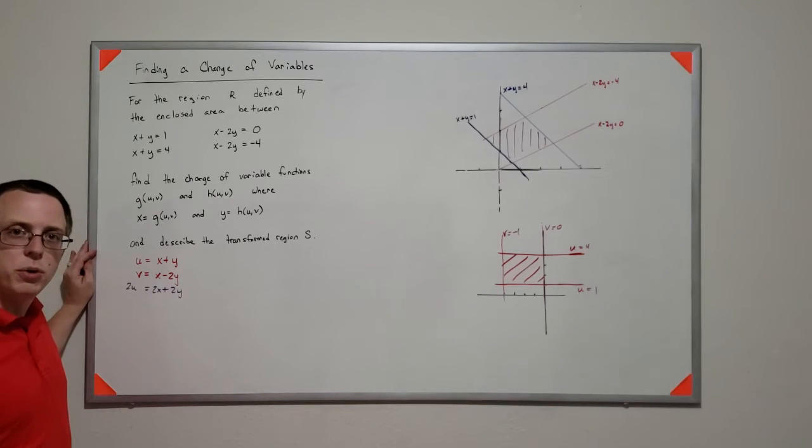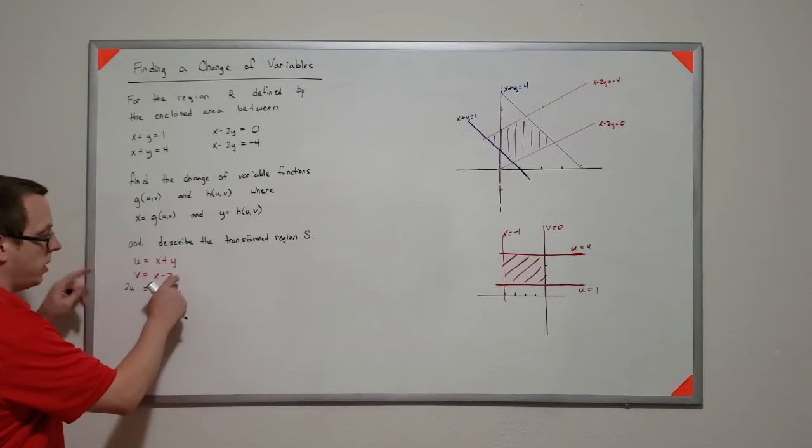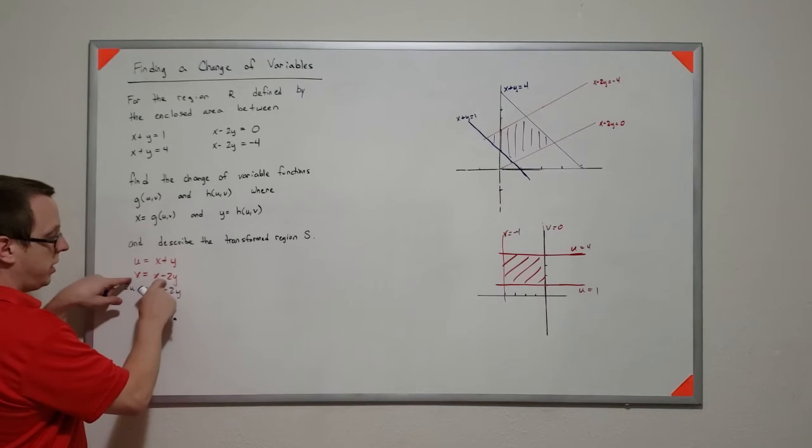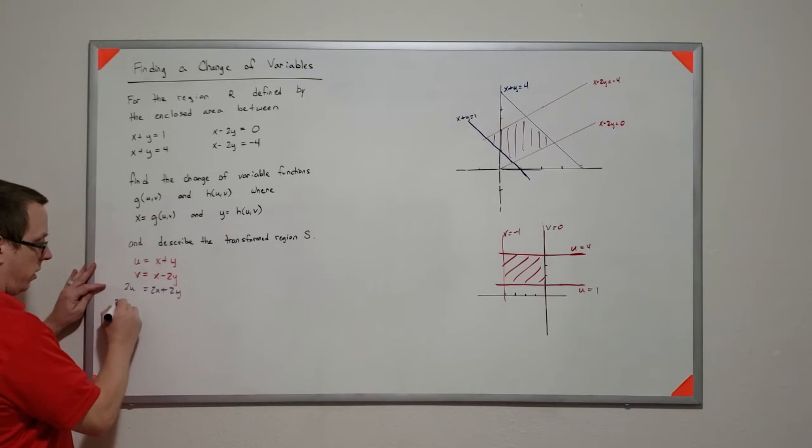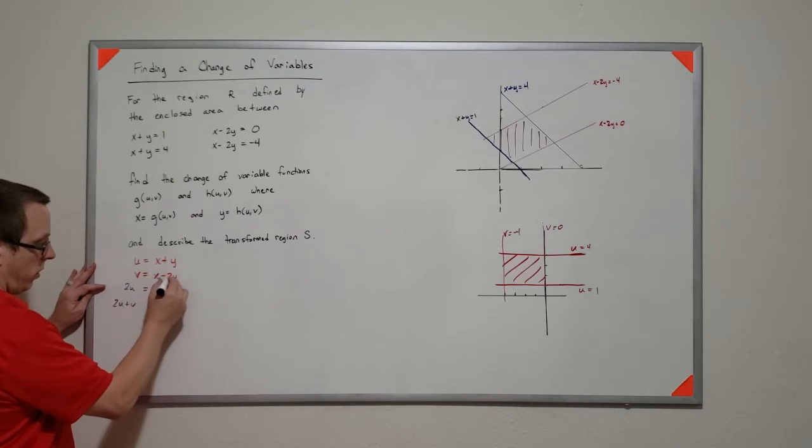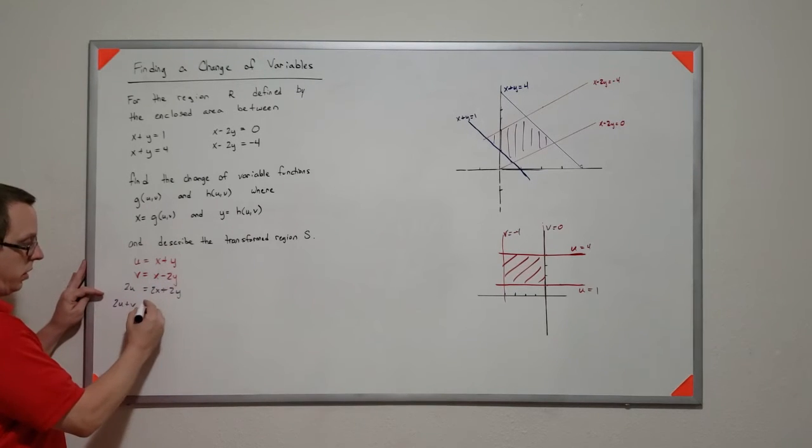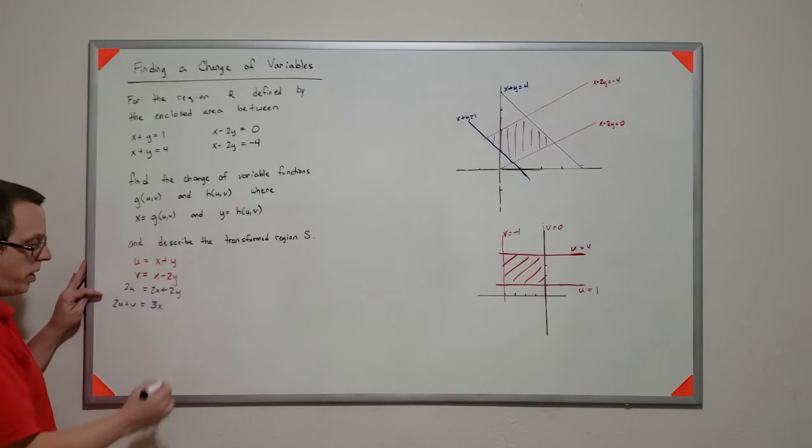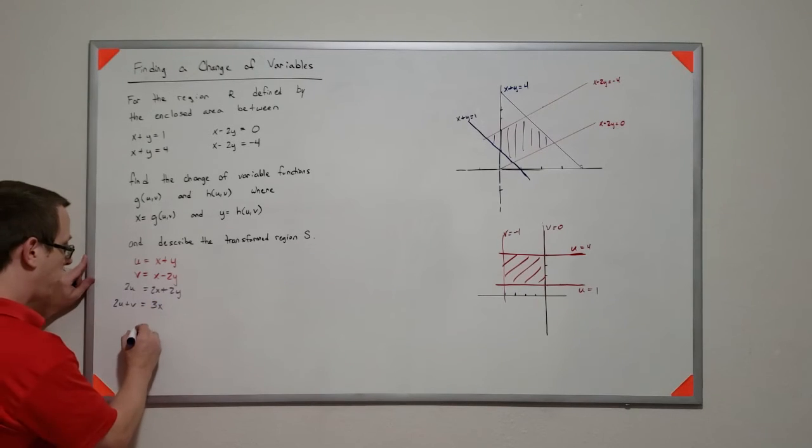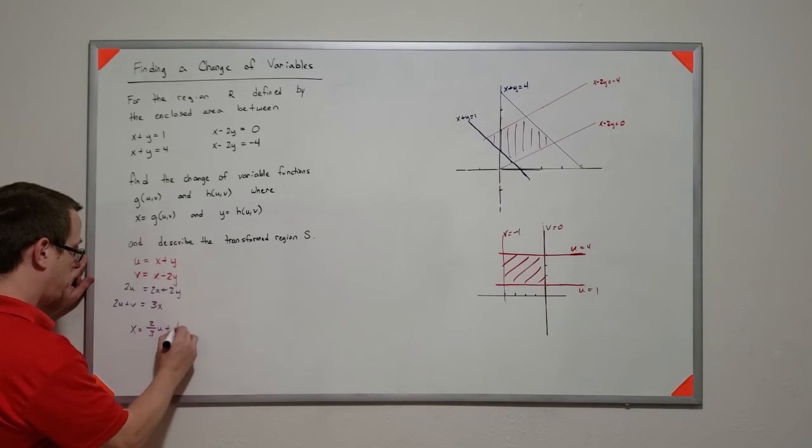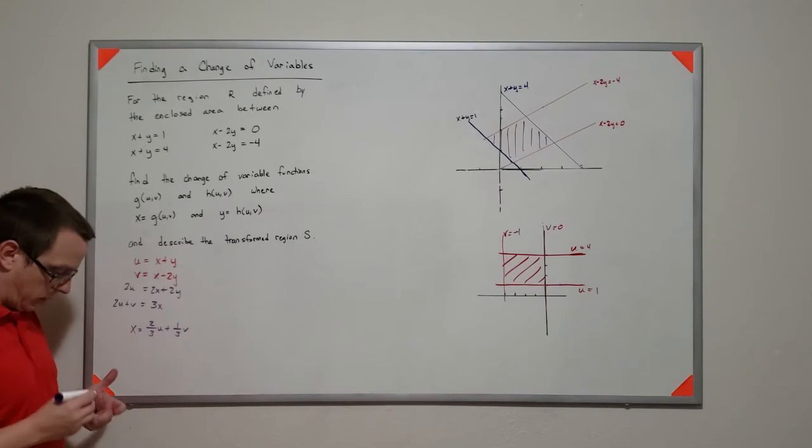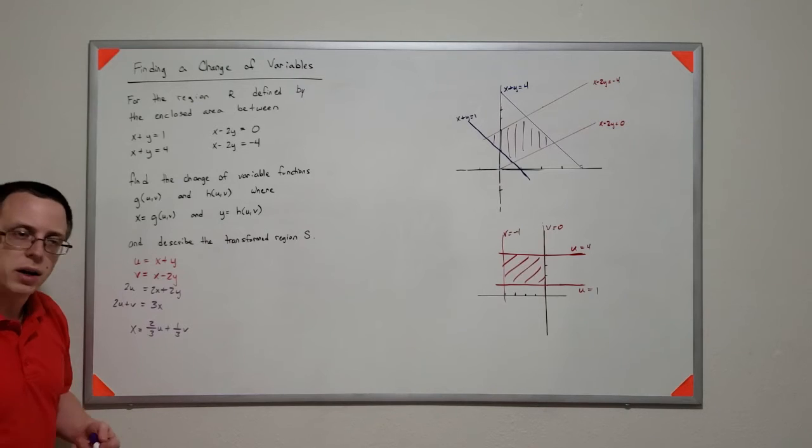And then what I'm going to do is I'm going to add the same thing to both sides, but on the right side, since these two are equivalent, I'm going to add the left sides together and I'm going to add the right sides together. But notice that these y's cancel, so I just get 3x, which leaves me with x is 2 thirds u plus 1 third v. And that gets me my equation in x.